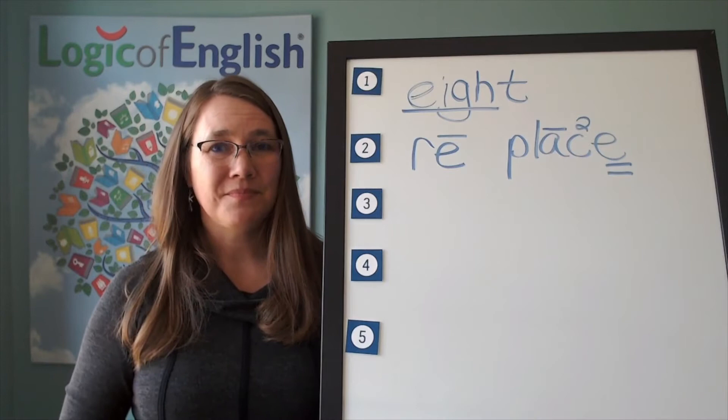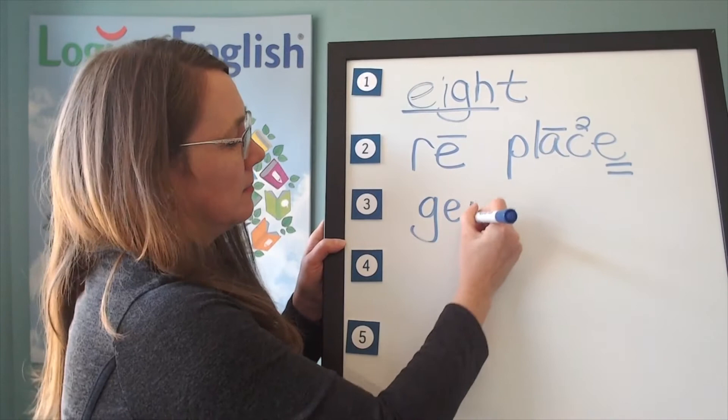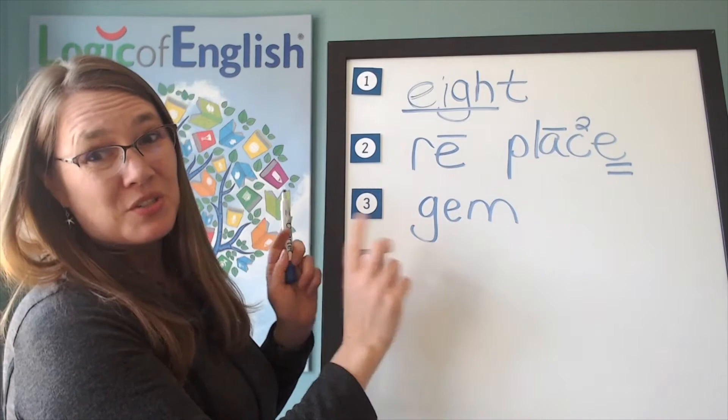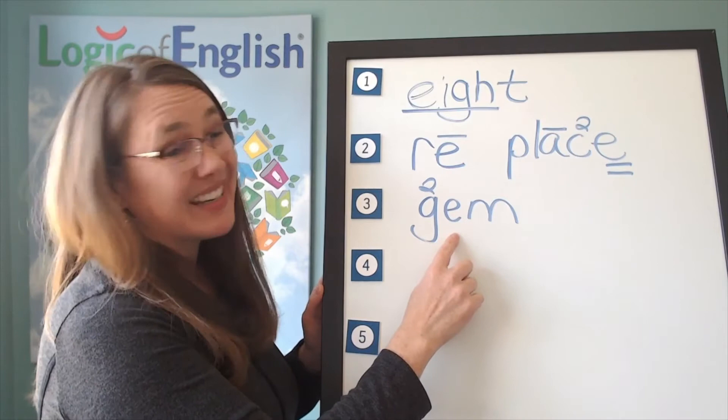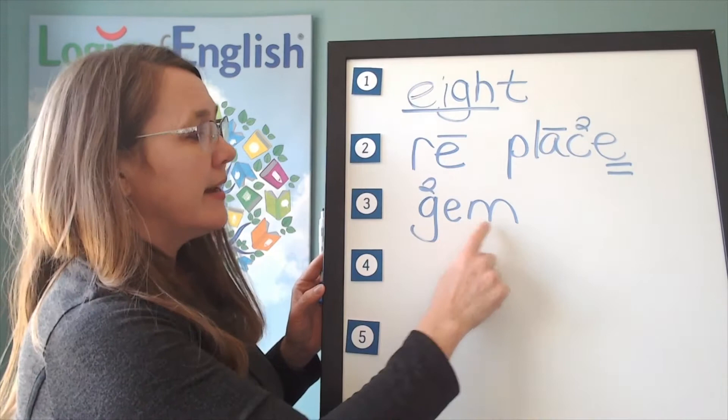All right. Help me to write it. J-E-M. All right. How will we mark gem? What sound of G-J do we hear? The second. And why is it saying its second sound? That's right. It's before an E. G may soften to J before an E, I, or Y. And here it's before an E. Let's sound it out. J-E-M. Gem.